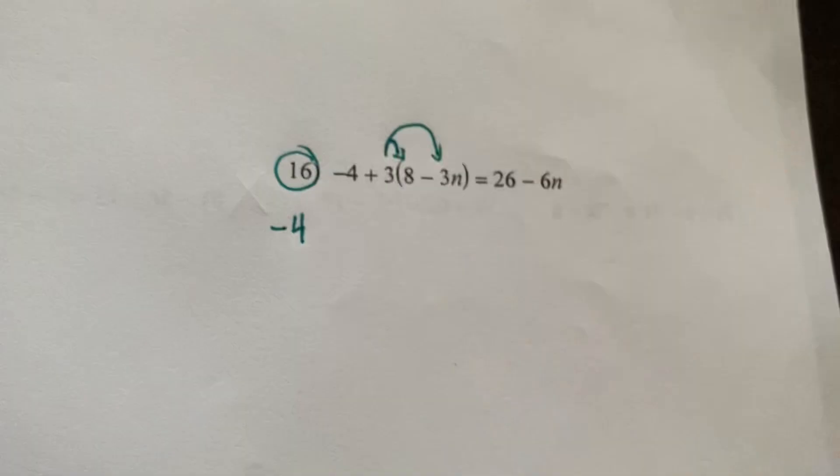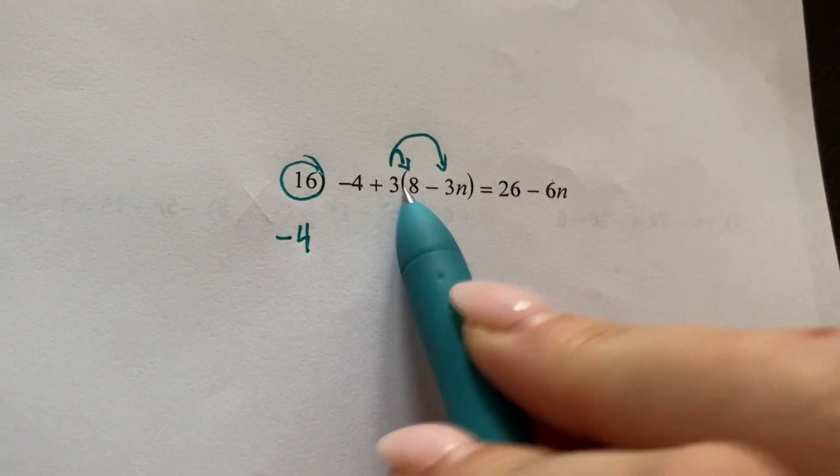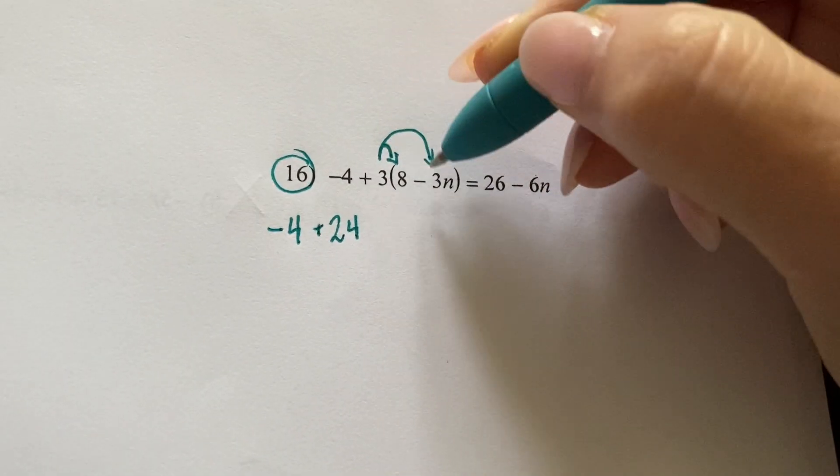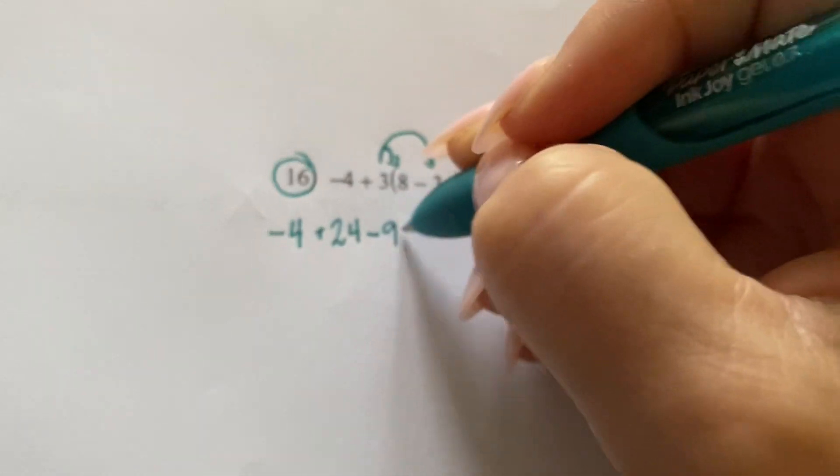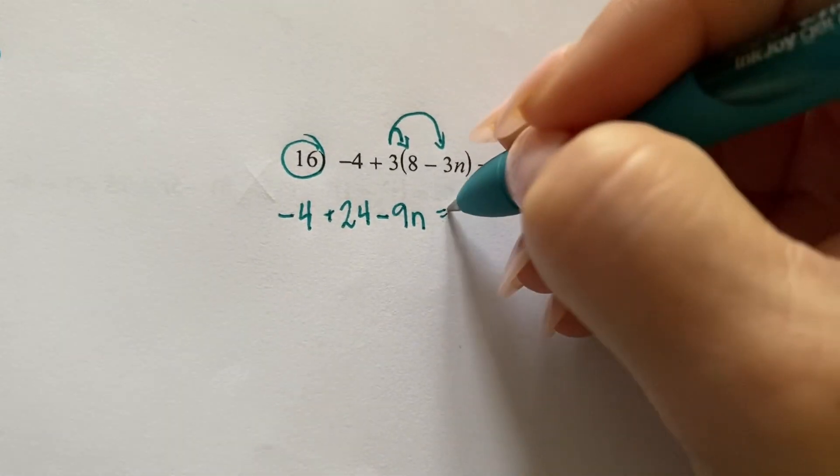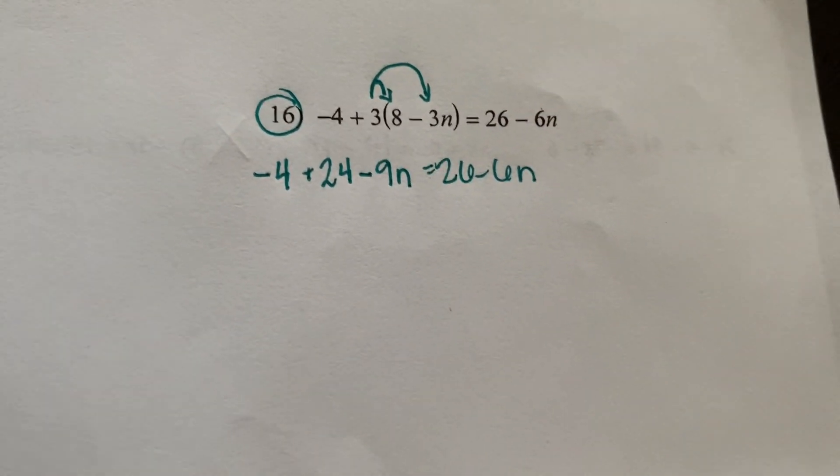So, negative 4. Nothing to do there yet. 3 times 8. Positive 24. 3 times negative 3N is a negative 9N. Now, I'm going to write these things. 26 minus 6N. Okay?